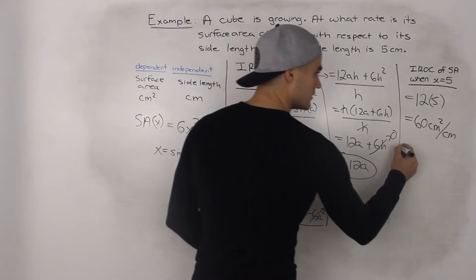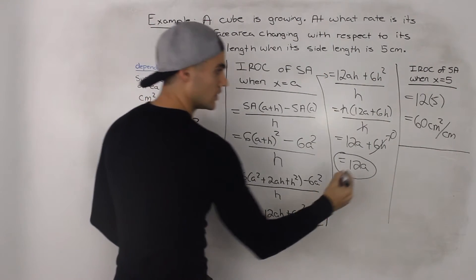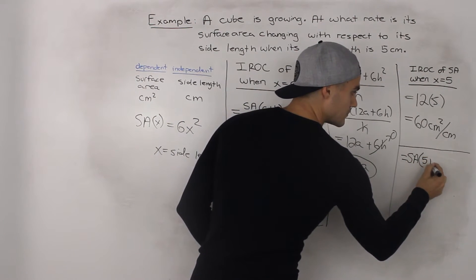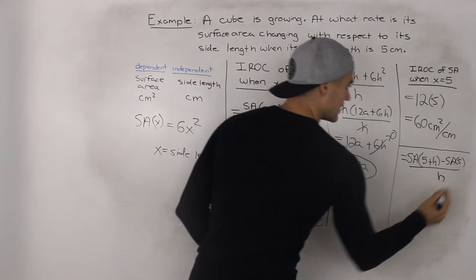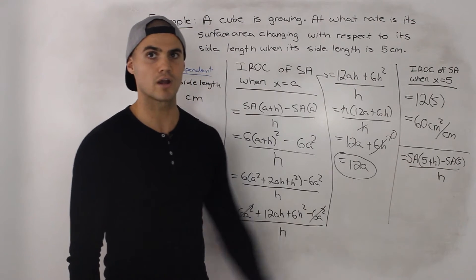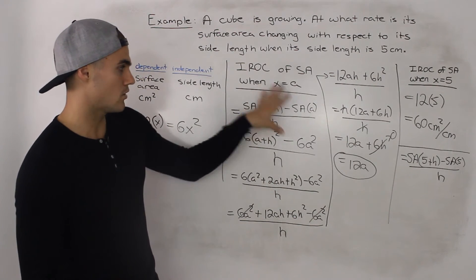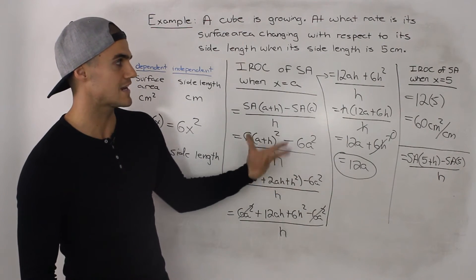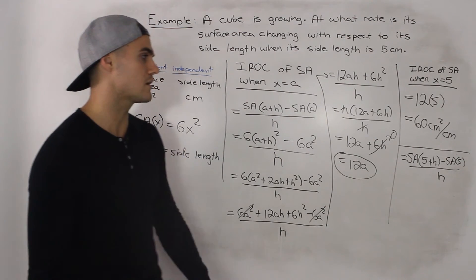Another thing you could have done: since they're looking for the instantaneous rate of change at a specific point, you could set up the difference quotient as the surface area of (5 plus h) minus the surface area of 5, all over h. Instead of getting a general expression first, if you did this you would end up getting 60 right away. But I recommend always getting a general expression first because it gives a lot more flexibility, especially if you're asked for the instantaneous rate of change multiple times.